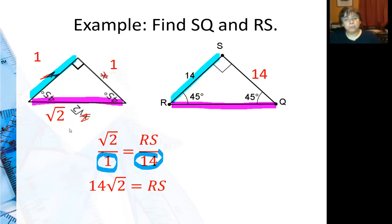Go ahead and cross multiply. And I get fourteen times square root of two equals RS times one which is just RS. And that's your answer. So I have both sides. SQ is fourteen and RS is fourteen times square root of two. I am very happy with that answer just as it's written. I really don't want the decimal.